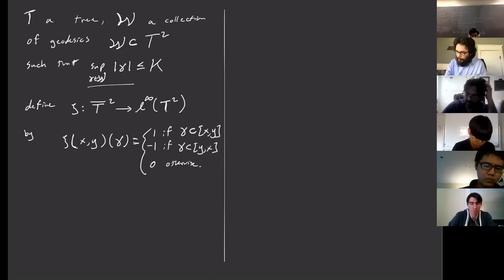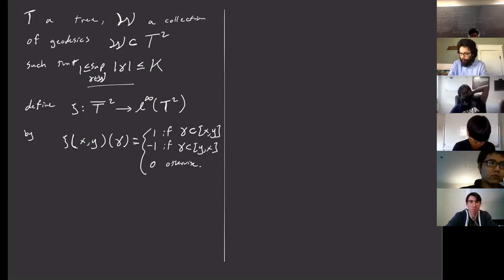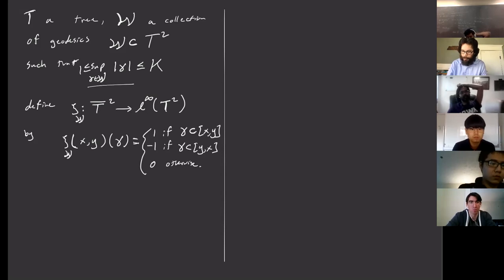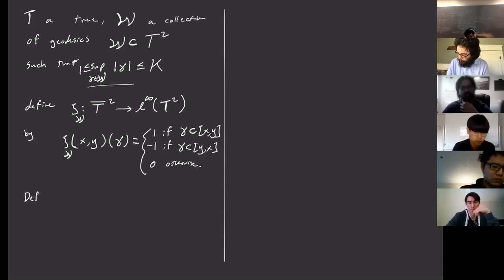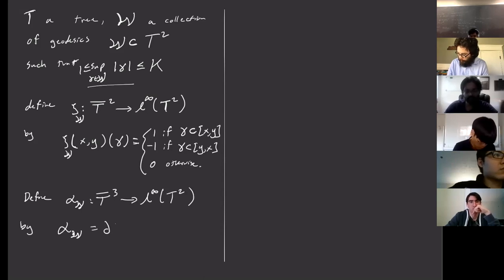For geodesics here, the length is always greater than or equal to one, so points are not allowed. This clearly defines a bounded function — a map from the closure of T to L-infinity of T squared. For each collection W, we have such a map. Then we define alpha_W, mapping T-bar cubed to L-infinity of T squared, as just the co-boundary of C_W.